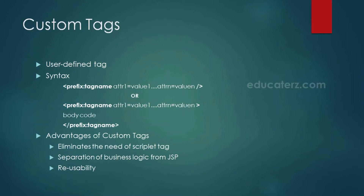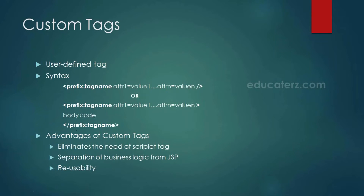A custom tag is basically a user-defined tag, as the name itself indicates. The syntax of a custom tag is: prefix colon followed by a tag name, and name-value pairs. If a custom tag has a body in it, then we need to write the body code inside the custom tag before closing it.